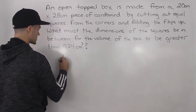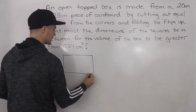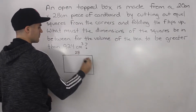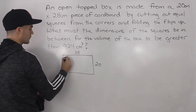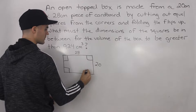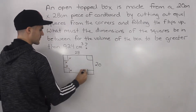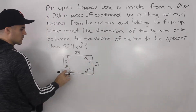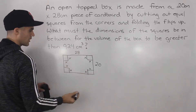We've done similar questions like this before, but this is actually going to be an inequality question. What's happening here? We have a 28 by 20 centimeter piece of cardboard. Then we're cutting out equal squares from each corner. So let's say that the dimensions of each of the squares is x. We're going to cut out these corners and then fold these sides up to create a box.